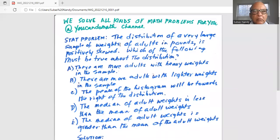So I'll share my computer screen with you. The distribution of a very large sample of weights of adults in pounds is positively skewed. Which of the following must be true about the distribution? A) There are more adults with heavy weights in the sample. B) There are more adults with lighter weights in the sample.